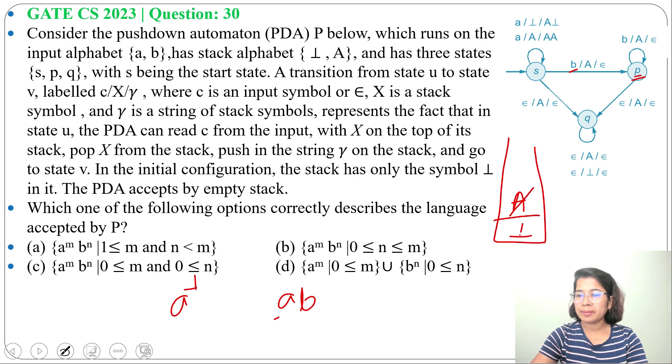Here for epsilon, it should pop A. Means at top of the stack, there should be A. But here at top of the stack, tau is there. So it will not accept A B.